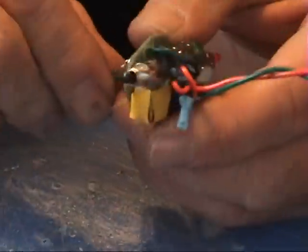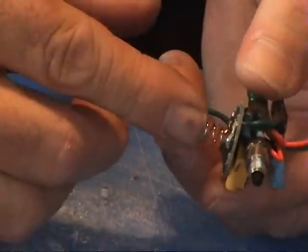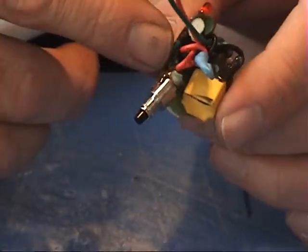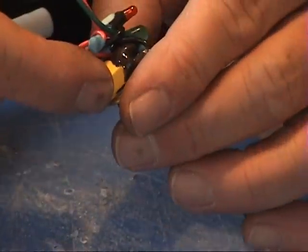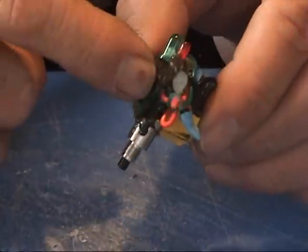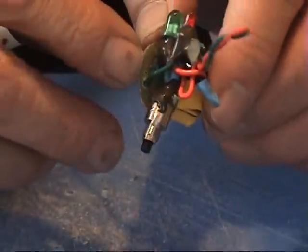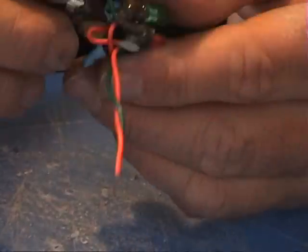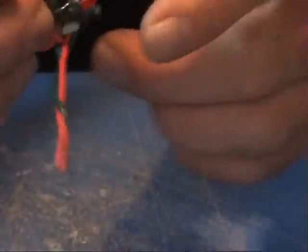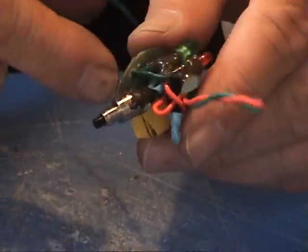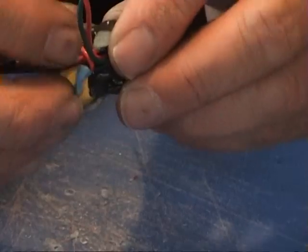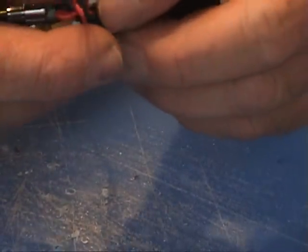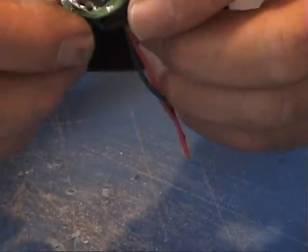Zoom in so you can see what I got. I got the positive coming up from the spring going into the switch, coming out of the switch connected to the voltage in on the regulator, connected to the flashing green light. The negative on the flashing green light is connected to the outside ring which is negative on the circuit board.